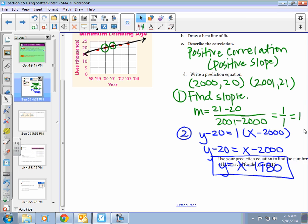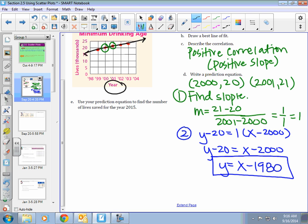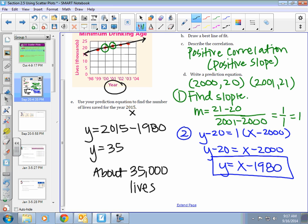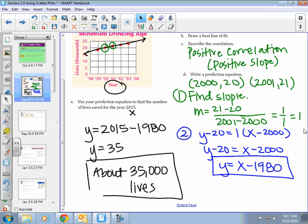Part E says to use your predicted equation to find the number of lives saved for the year 2015. Notice the year is your X value. I am going to plug in 2015 for X into our equation we just came up with. 2015 minus 1980. Y is equal to 35. We have saved about, and we should read, it is in thousands, 35,000 lives by increasing the drinking age to 21.